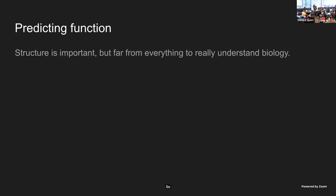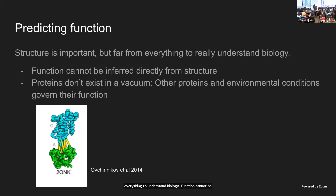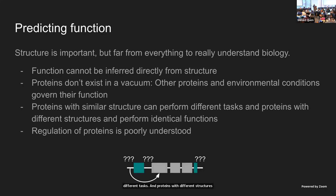There's been a lot of cool progress made in structure, but structure is important yet far from everything to understand biology. Function cannot be directly inferred from structure. Proteins do not exist in a vacuum — what a protein does is not only encoded in the protein itself, but how it interacts with other proteins physically or in a pathway, and how it functions in different environments. Proteins with similar structure can perform vastly different tasks, and proteins with different structures can perform identical functions. Regulation of proteins is highly, poorly understood because regulatory sequences are very poorly characterized.